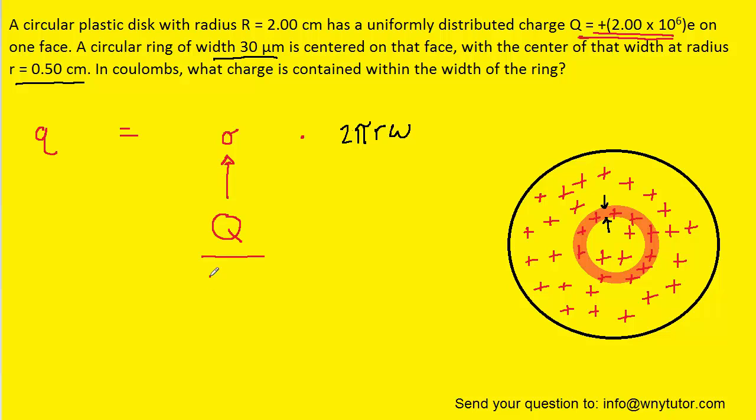And because it's a circle, we know that the total area would be π multiplied by capital R squared. Note that we're using capital R because we're looking for the area of the entire circular plastic disc. So we have to use its entire radius. So we'll make this substitution for the surface charge density.